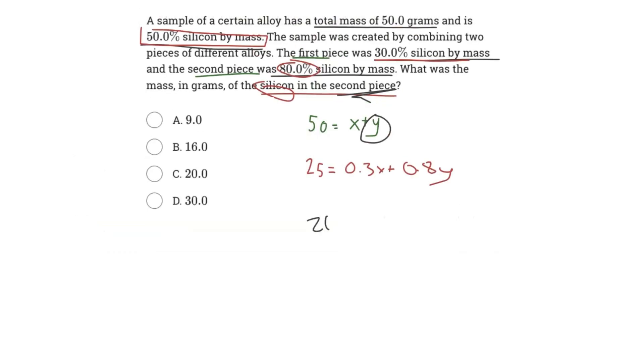So 20 grams is the total mass. This is the total mass, not the silicon of the mass of the silicon. To find the mass of the silicon in the second piece, we need to multiply it by that 80% factor, because only 80% of that 20 grams is actually silicon. So 20 multiplied by 0.8 gives us a grand total of 16 grams of silicon. Therefore, B is our answer.